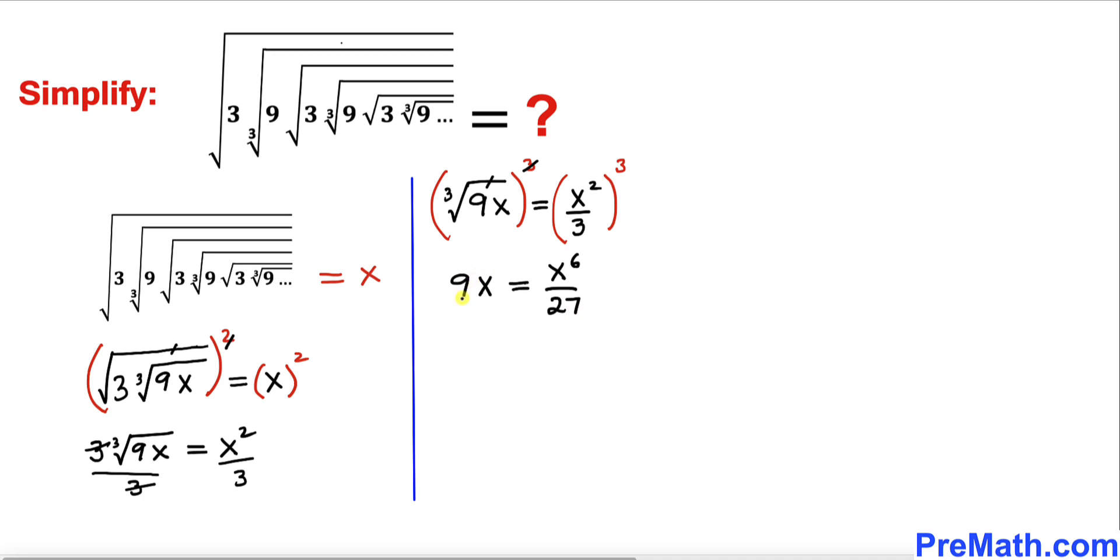Now let me go ahead and make a fraction on the left hand side by just putting 1 underneath, and now we are going to cross multiply. So we are going to get x to the power 6 equal to, on the right hand side, 9 times 27 is 243x.